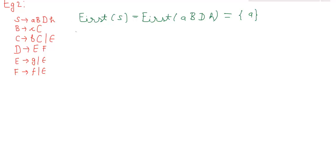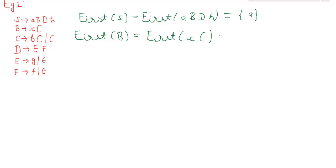Then we have first(B), which is equal to first(c, C). According to rule number one for the calculation of first set, it will provide us {small c}.